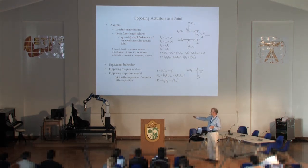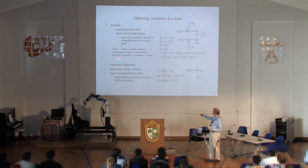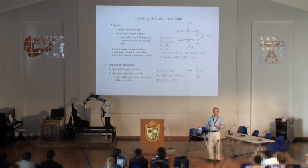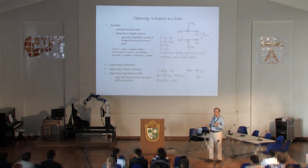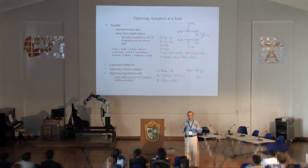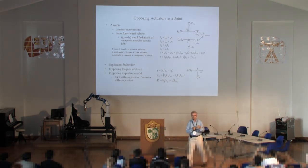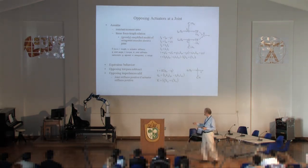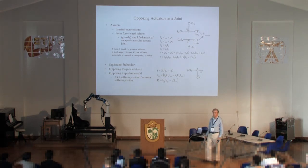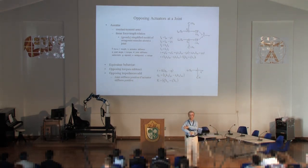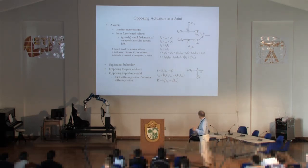If you make the assumption of constant moment arms and a linear force-length relationship — which is grossly simplified — what you wind up with is that the effective opposing torques always subtract when you have muscles on opposite sides of the joint, but the impedance terms always add. That's true independent of the kinematics, because impedances are bilateral effects and forces are unilateral. So joint stiffness is positive if actuator stiffness is positive, and you can co-contract muscles and your arm gets stiffer.